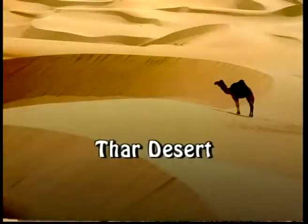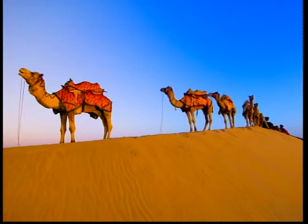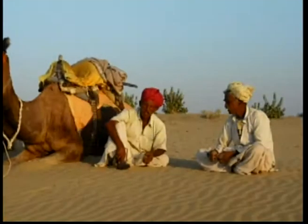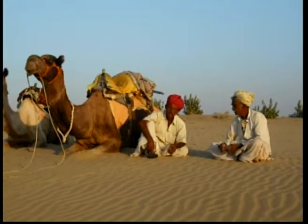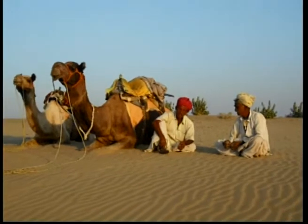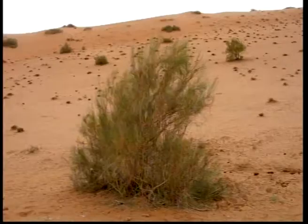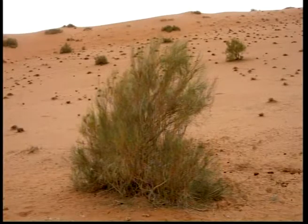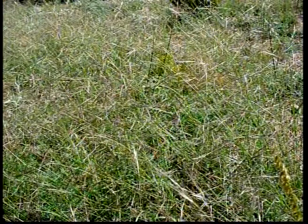Thar Desert: It is located in Rajasthan, India and is popularly known as the Indian Desert. Sand dunes are the common feature. Common plants are Hanolyzden, Anthopria caducifolia and Aristida.